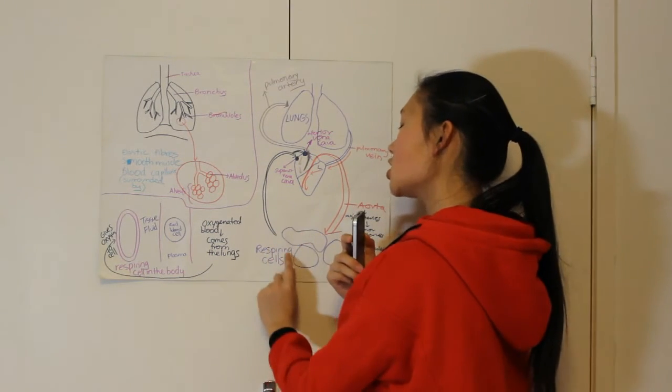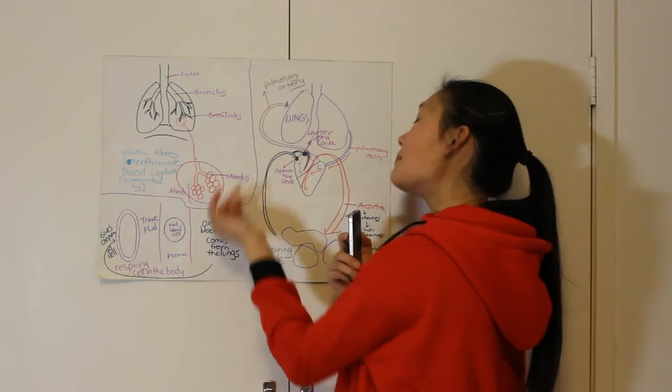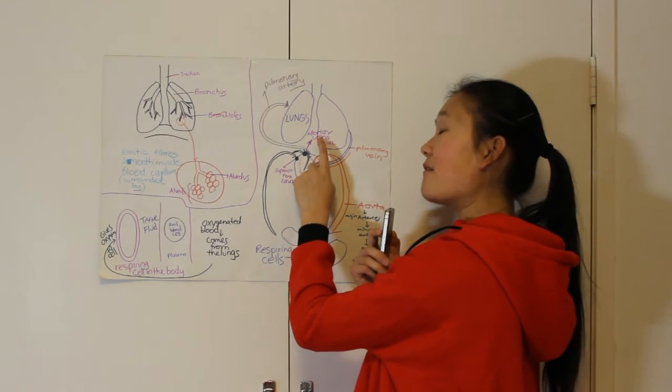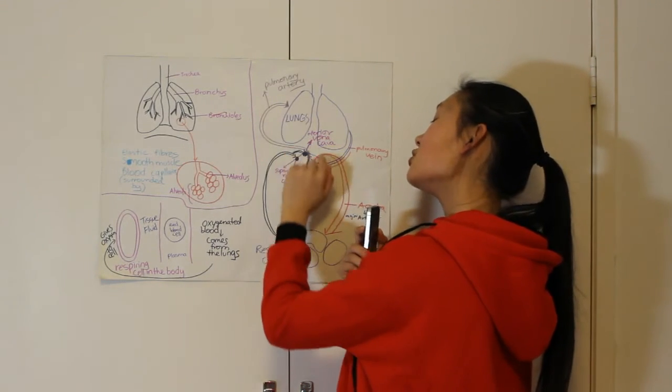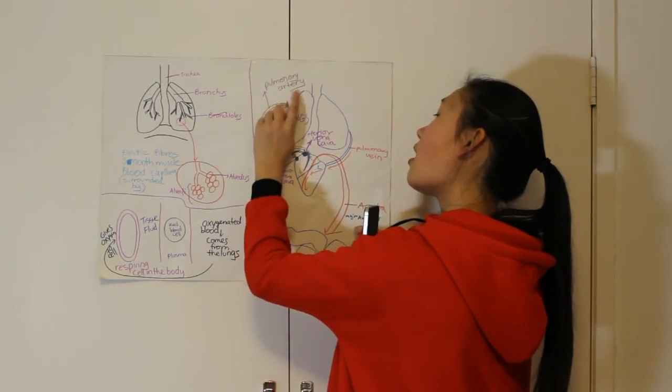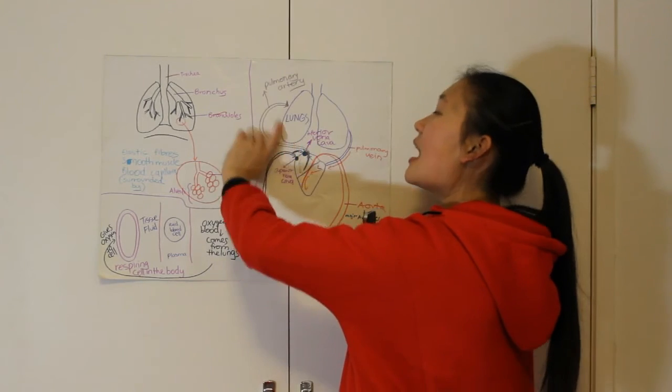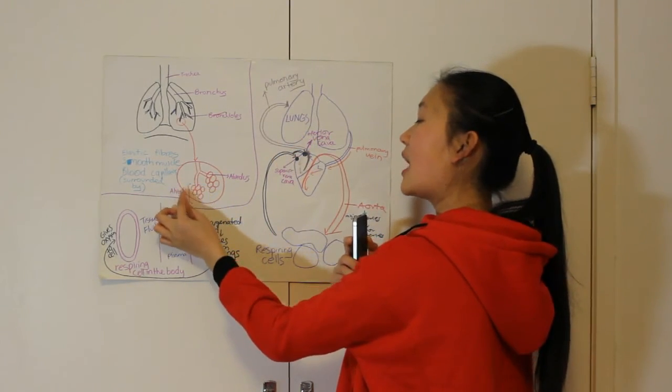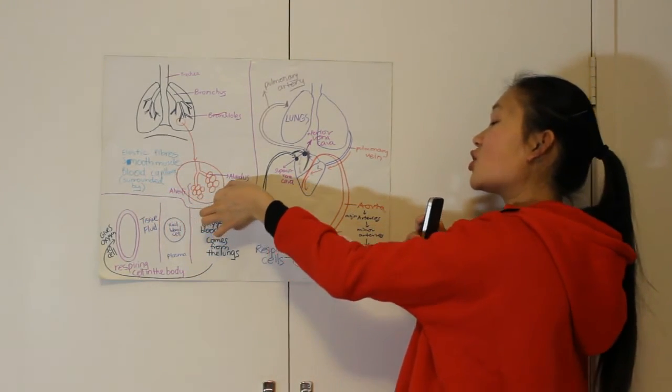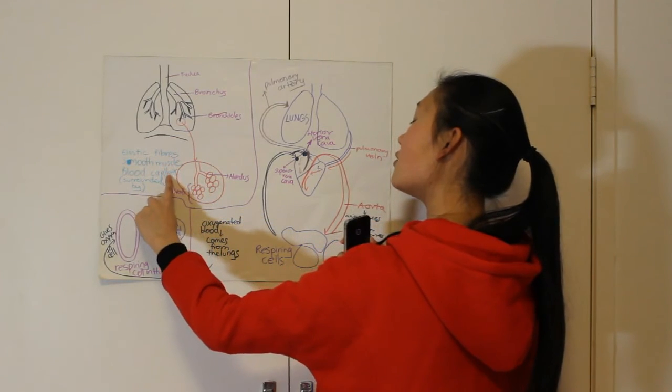So this deoxygenated blood will be taken into the right atrium by two of the largest veins in the body, the superior vena cava and inferior vena cava. It will be taken into the right atrium, down to the right ventricle, and then boosted up through the pulmonary artery and then into the lungs again. And then in the lungs the alveoli does its job. So imagine this is the capillary. It lies closely next to the alveoli.